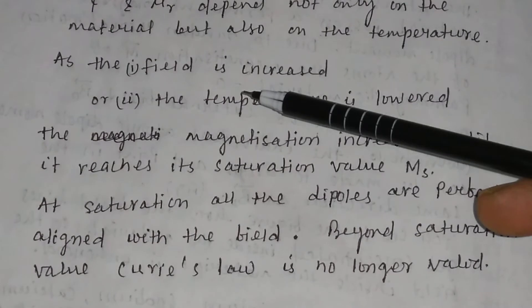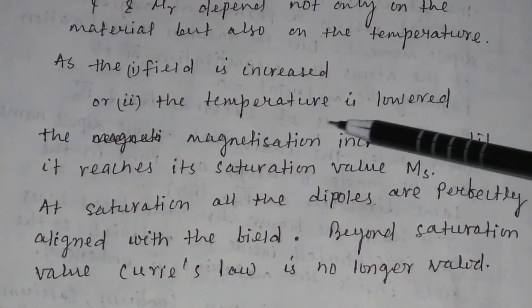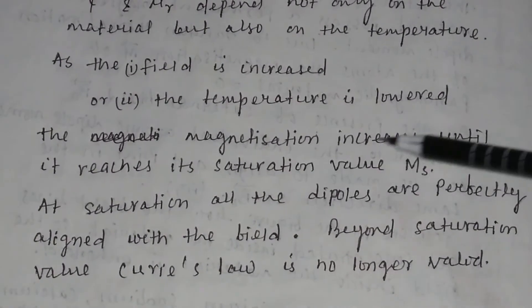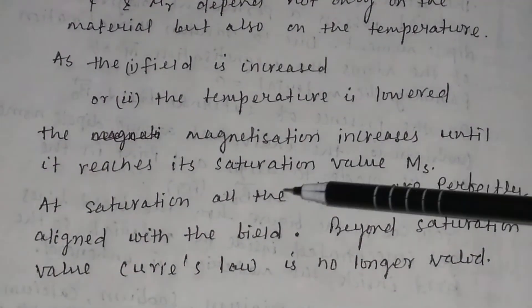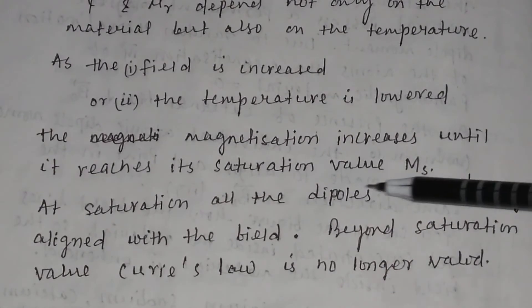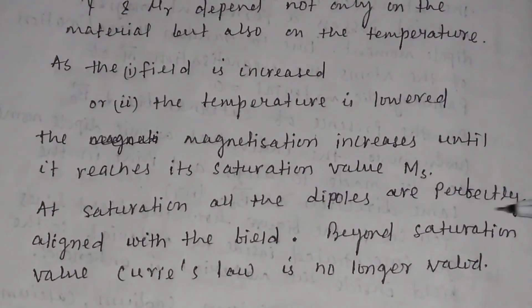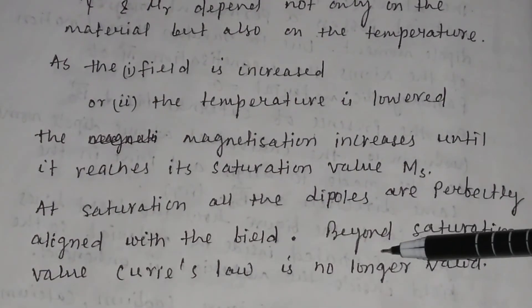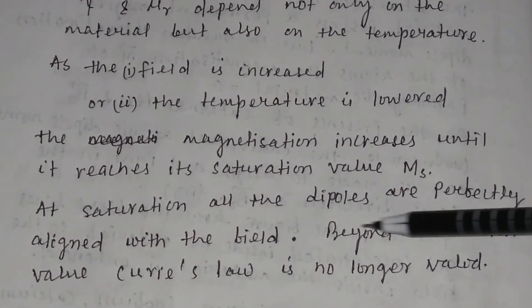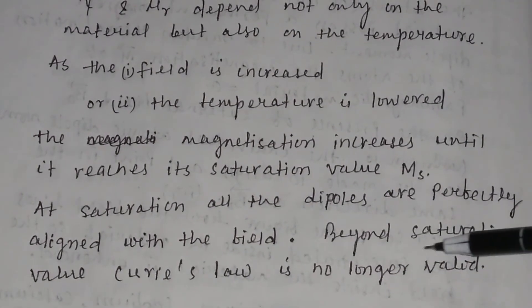As the applied magnetic field is increased or the temperature is lowered, the magnetization increases until it reaches its saturation value Ms. At saturation, all the dipoles are perfectly aligned with the field. Beyond saturation value, Curie's law is no longer valid.